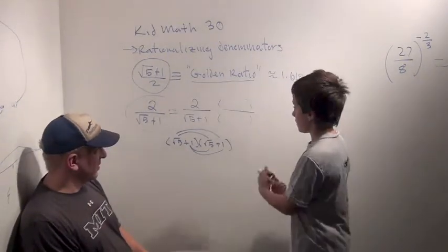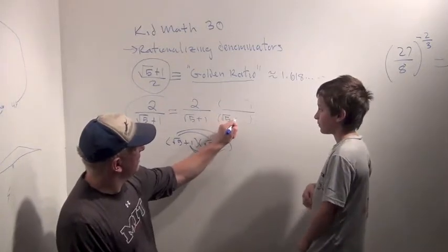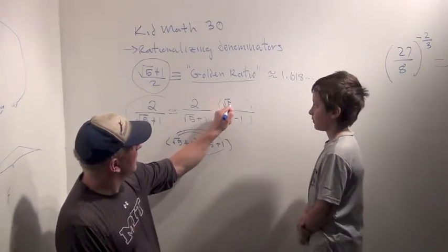No. So we have to do square root of 5 minus... We're going to use our difference of squares and do square root of 5 minus 1, square root of 5 minus 1. Okay?